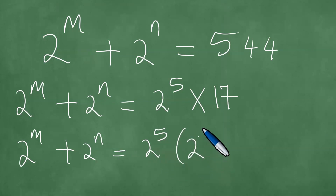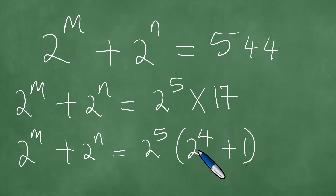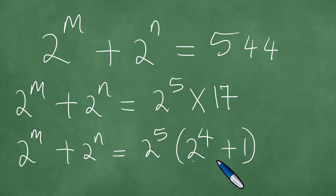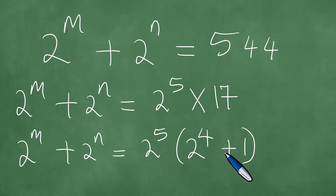17 is the same as 2 to the power 4 plus 1, which is 16 plus 1 equals 17. At this point we can apply the distributive law — the property that multiplication distributes over addition.